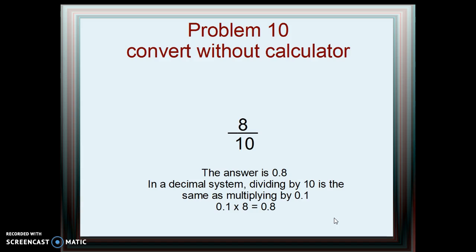Eight divided by 10: the answer is 0.8. In the decimal system, dividing by 10 is the same as multiplying by 0.1, so we simply move the decimal point after the 8 to the left.